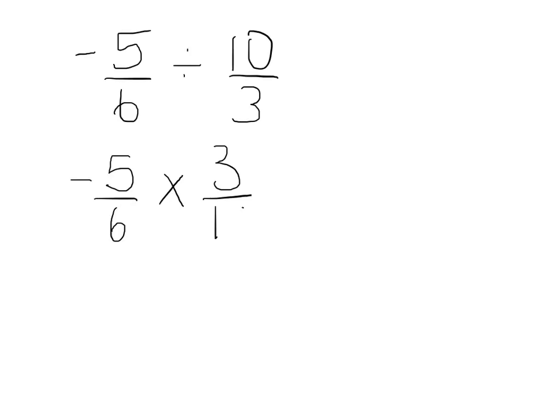But what if we use different fractions? Let's try doing negative 5 sixths and divide that by 10 over 3. So the first thing we have to do is flip the second term so we're looking at a multiplication question. So negative 5 sixths multiplied by 3 over 10 because 3 over 10 is the inverse of 10 over 3.